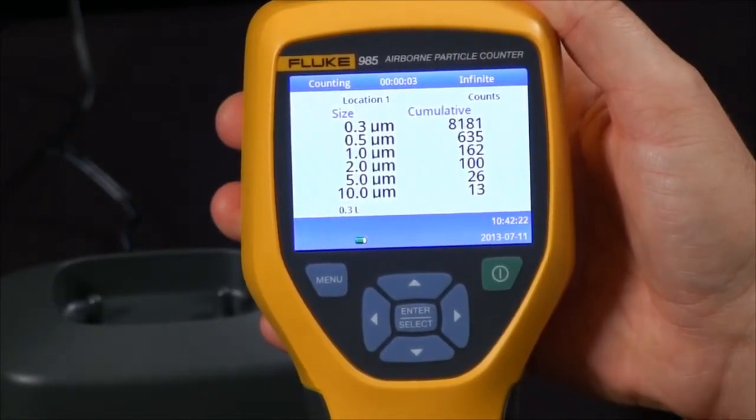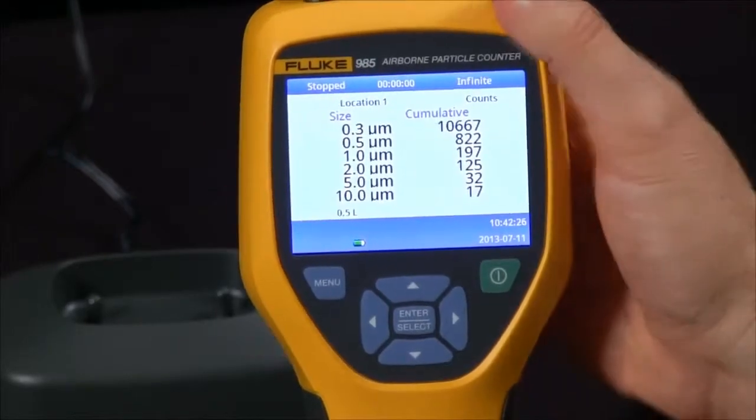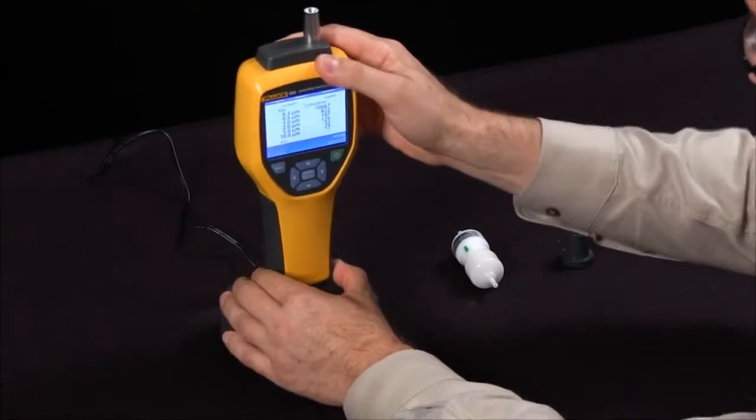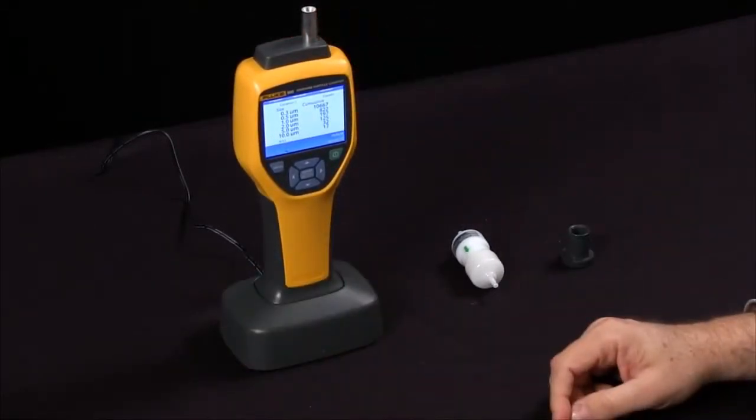Once you have your readings, you can simply place the 985 particle counter in the base and download your data, as well as charge the device for future use.